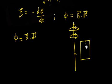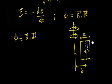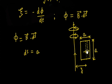Let us say at a distance y from the bar, we consider an elemental strip at y to y plus dy, so the elemental thickness is dy. The side length of the loop is A, so this length is A. The elemental area dS is therefore A times dy.